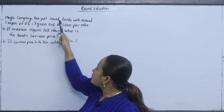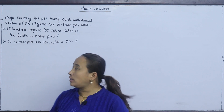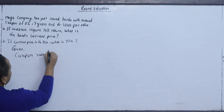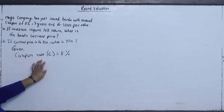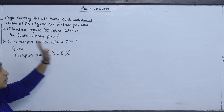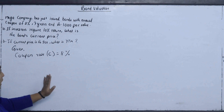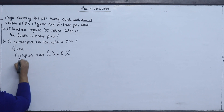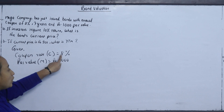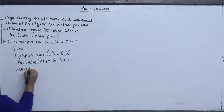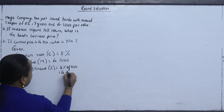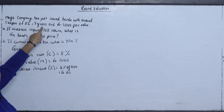Example problem: Mega company has just issued a bond with an annual coupon rate of 8%. The coupon rate gives us the interest amount. The par value is $1,000, so the interest amount I equals 8% of 1000, which is $80. The bond has a life of 7 years.